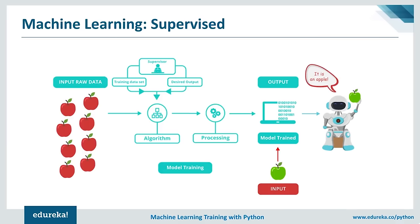Starting with supervised learning — mathematically, supervised learning is where you have input variables X and an output variable Y, and you use an algorithm to learn the mapping function from input to output: Y = F(X). The goal is to approximate the mapping function so that whenever you have new input data X, you can predict the output variable Y.